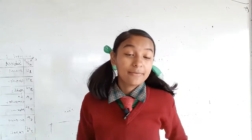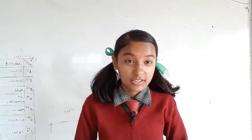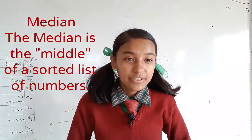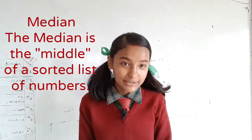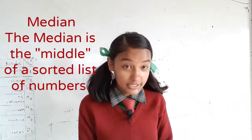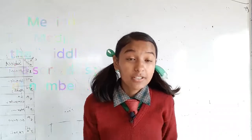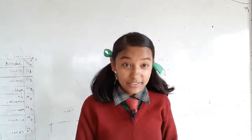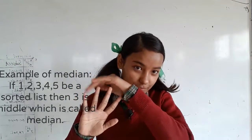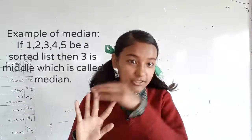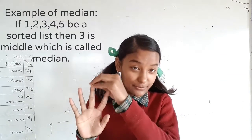Hi everyone, today I'm here for the discussion about the median. The median is the number which is exactly lying in the middle of the sorted list. For example, if there are five numbers — one, two, three, four, five — the three is the median because it lies in the middle.